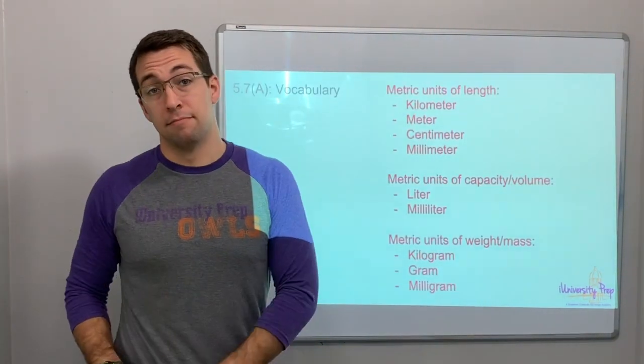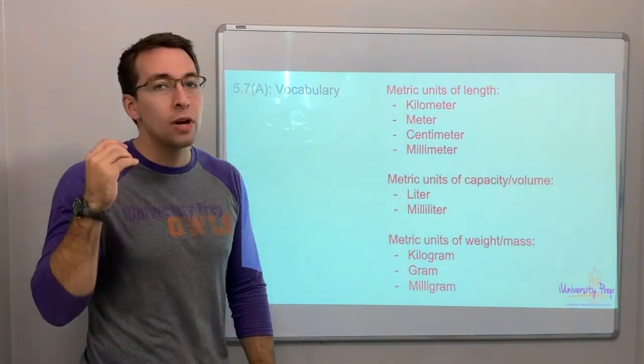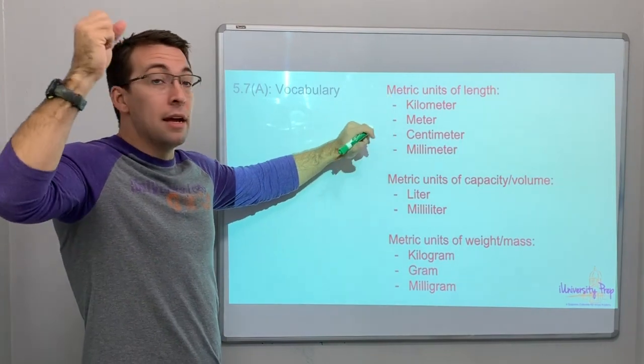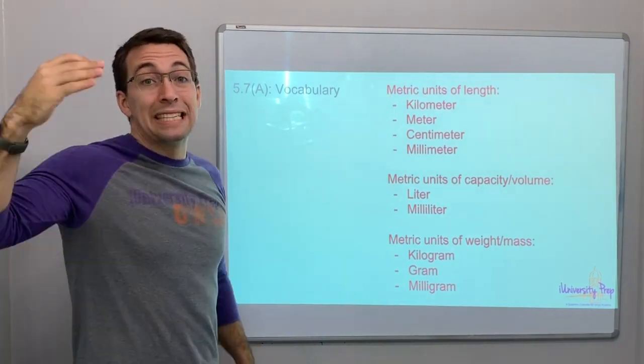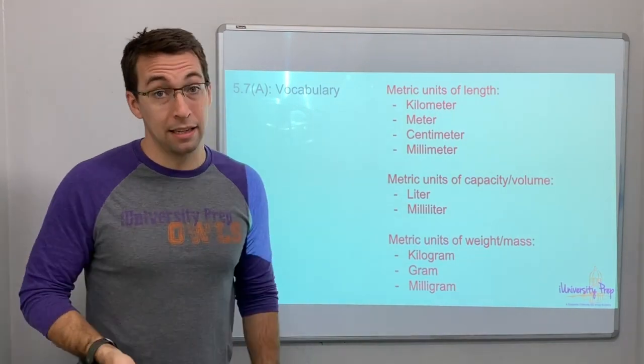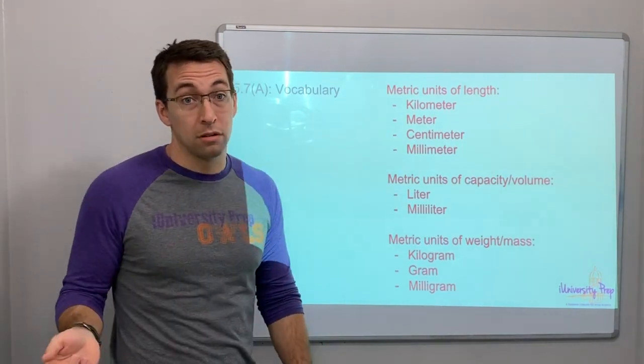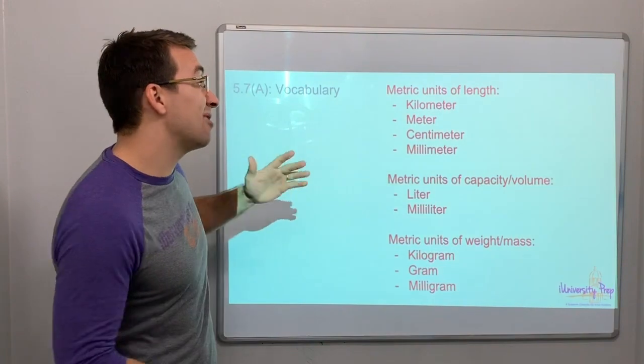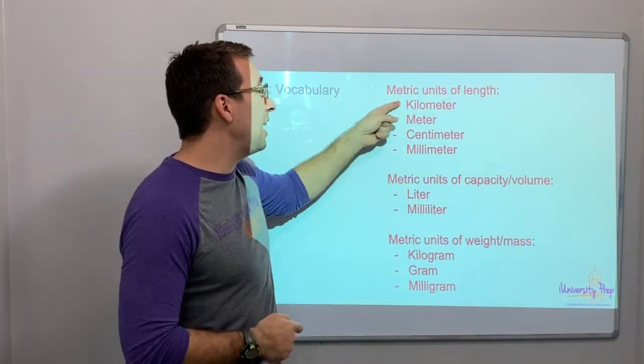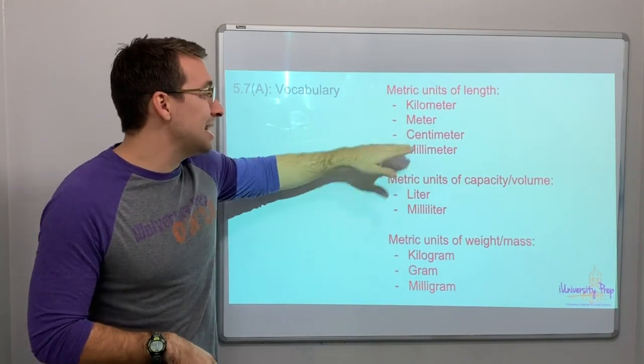Metric system. Again, just more volume. You've got to know this. And we're about to talk about the rhyme or the acronym. King Henry danced merrily down, or King Henry died unexpectedly drinking chocolate milk. King Henry died unexpectedly drinking chocolate milk. So you've got to know kilo, centi, milli, hecto, deci.